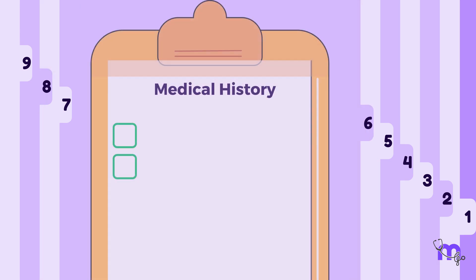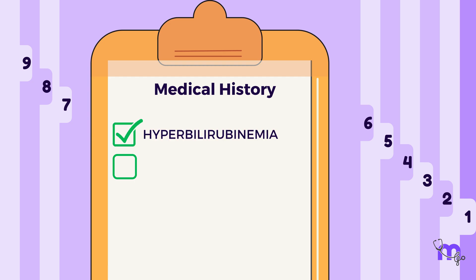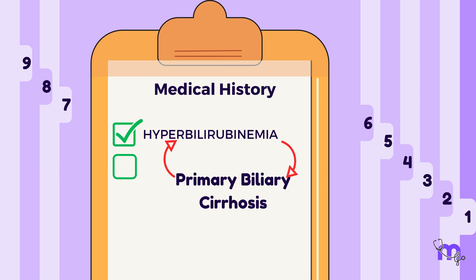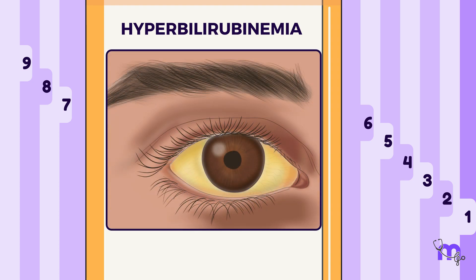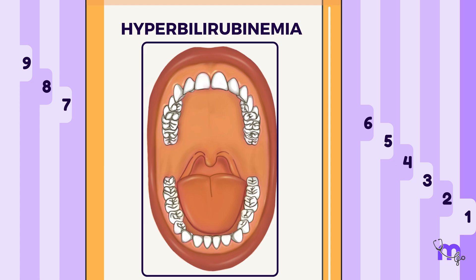A positive medical report for hyperbilirubinemia suggests a possible link to the systemic disease primary biliary cirrhosis. Hyperbilirubinemia also induces a yellowish discoloration of the skin, eyes, and mucous membranes.